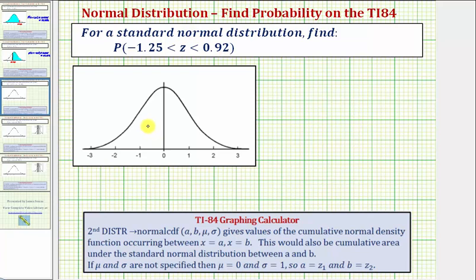Looking at the graph of the standard normal distribution shown here below, z equals negative 1.25 would be approximately here, and z equals 0.92 would be approximately here.